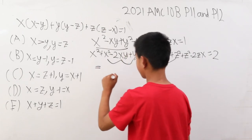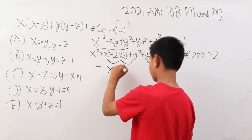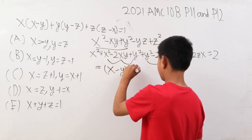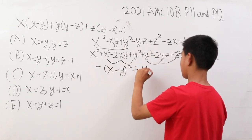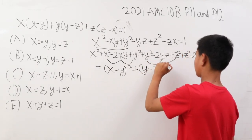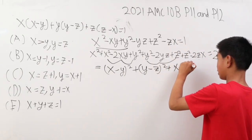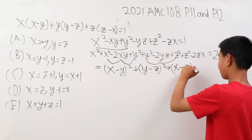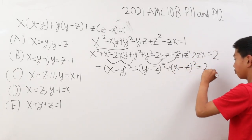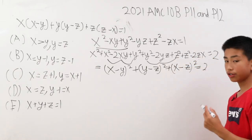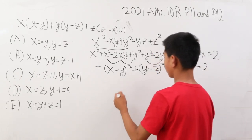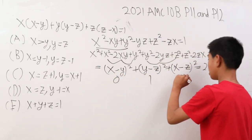So now this is equal to x minus y squared plus y minus z squared plus x minus z squared equals 2. Now for this to be 2, it has to be in this order: 0, 1, and 1.